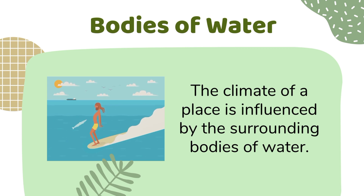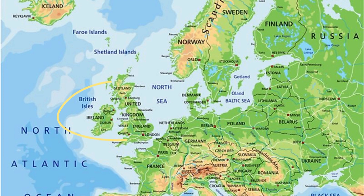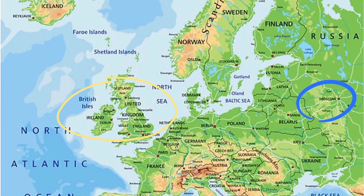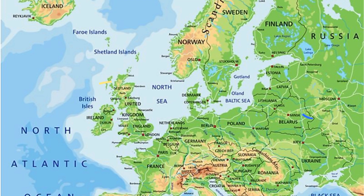The third factor is bodies of water. The climate of a place is influenced by the surrounding bodies of water. Look at the picture — it shows the British Isles and the part of Russia near Moscow. Being in the temperate region, both places have four seasons. Even though both places are at the same latitude, the northern tip of the British Isles has a more moderate climate due to the neighboring bodies of water.